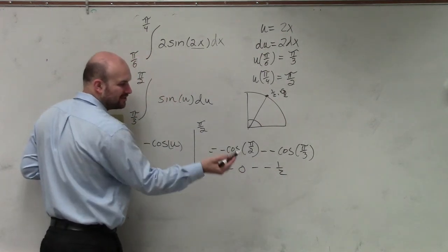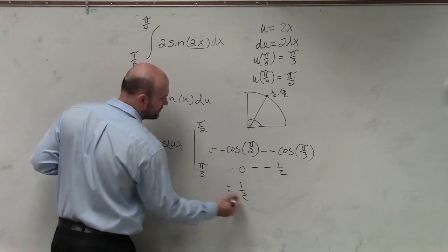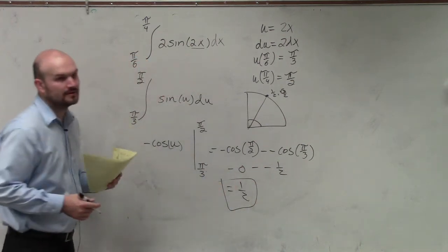Well, minus 0 is nothing. Minus a double negative is going to equal positive 1 half. OK?